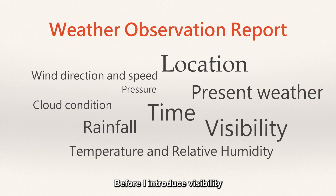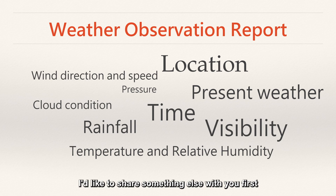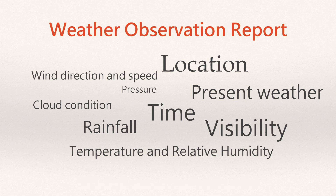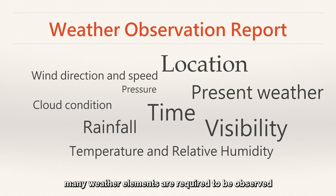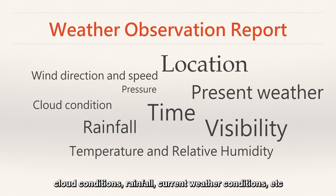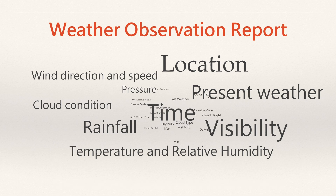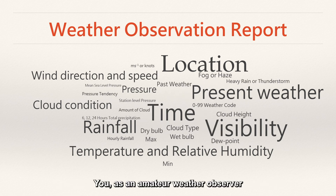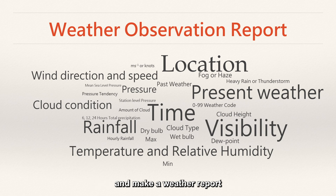Before I introduce visibility, I'd like to share something else with you first. In weather observation, many weather elements are required to be observed, such as wind direction, wind speed, cloud conditions, rainfall, current weather conditions, etc. You, as an amateur weather observer, want to perform a weather observation and make a weather report. What should be included in your weather report?